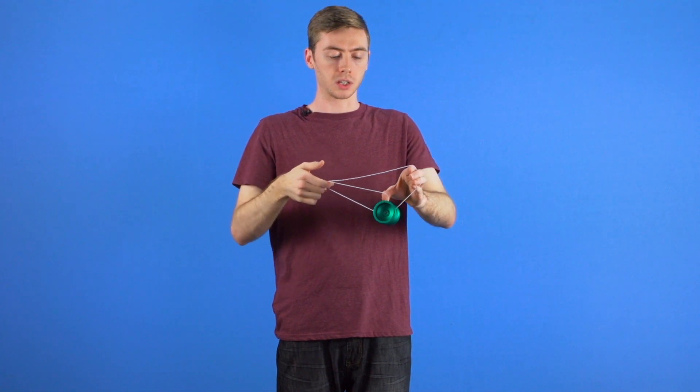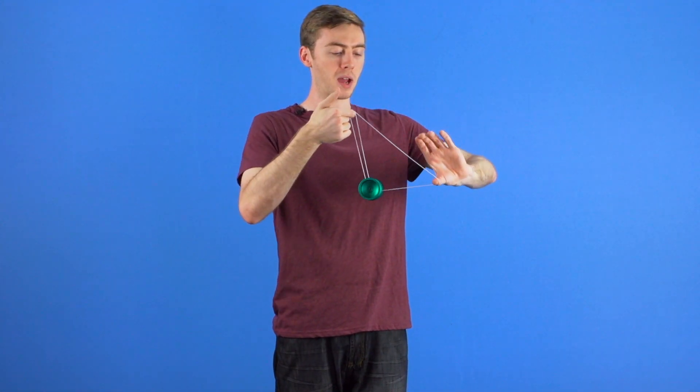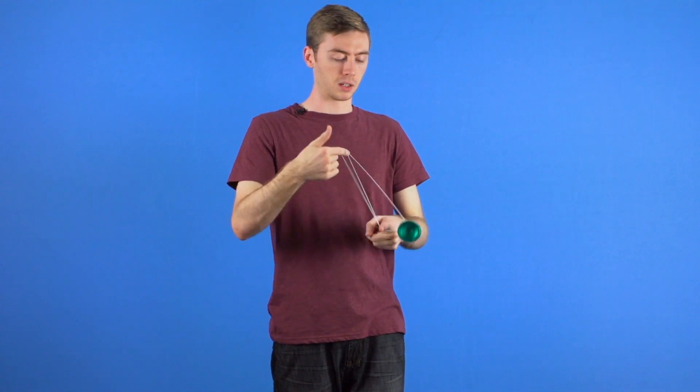Then when the yoyo is coming back, you're going to tilt your thumb down and use the momentum to pull the yoyo back out through and land back into a split bottom mount.